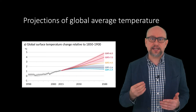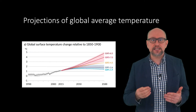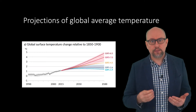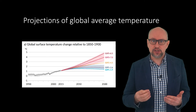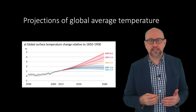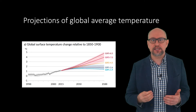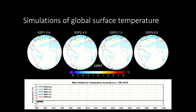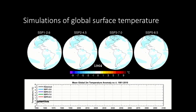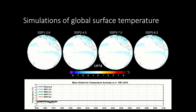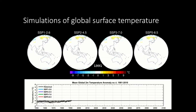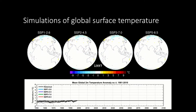The simulations indicate that global surface temperature will continue to increase until at least the mid-century under all emission scenarios considered. Global warming of 1.5 degrees Celsius and 2 degrees Celsius will be exceeded during the 21st century unless deep reductions in CO2 and other greenhouse gas emissions occur in the coming decades. While Earth's average global temperature is rising, the amount of warming is not equal in all areas of the world. This visualisation shows how temperature changes will be distributed across the globe for four out of the five scenarios discussed.